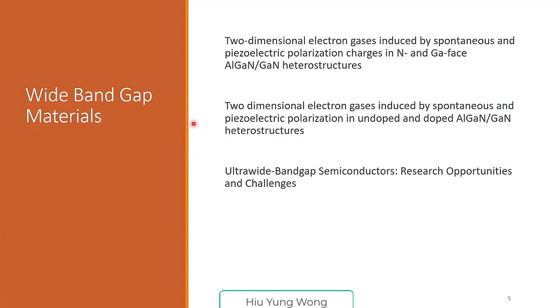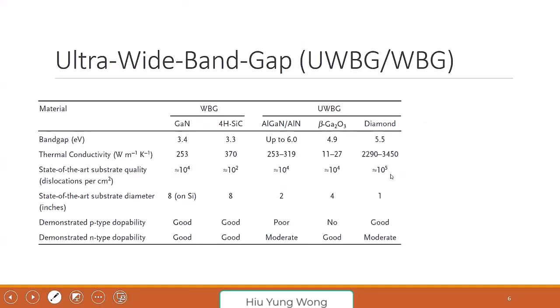Why bandgap materials? I uploaded some papers. They are very important papers that many people refer to. The first two papers are about gallium nitride. The last paper is about general ultra-wide bandgap devices. This is a simple slide, but I'm going to spend a lot of time. I want you to understand five items, so please pay attention.